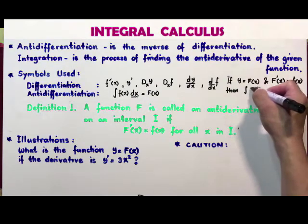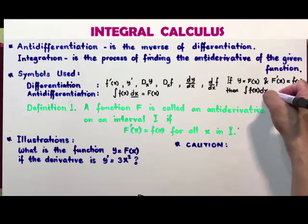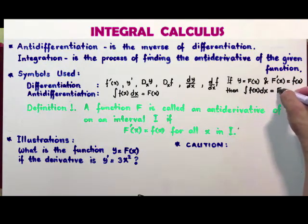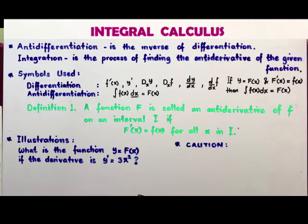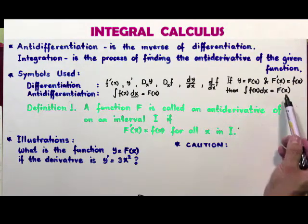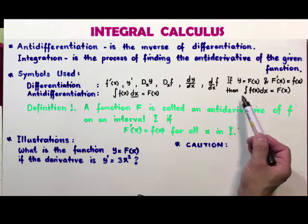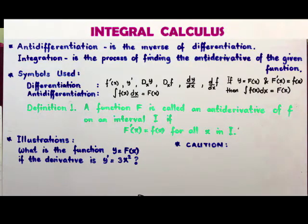This means that the integral of small f(x) dx is the original function big F(x). If big F(x) is a function whose derivative is small f(x) on a certain interval, then big F(x) is called the anti-derivative of small f(x), which is the integral.